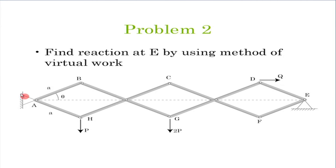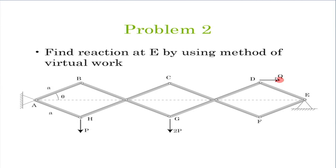To this mechanism we apply a load of P, a load of 2P, and a horizontal force Q at point D. We are asked to find the horizontal reaction at point E. Note that BG is one complete member, HC is one complete member, CF and GD are each one complete member — these are not two-force members. This is a one-degree-of-freedom problem: if this angle theta changes by delta theta, that change is reflected uniformly everywhere.